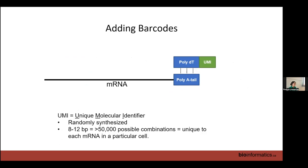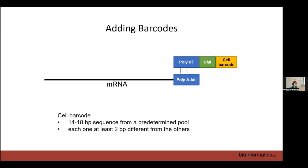The UMI is a randomly synthesized barcode, typically 8 to 12 base pairs, giving over 50,000 possible combinations. In theory this should be unique to a particular mRNA molecule in a particular cell. In practice, we end up using the combination of which read the UMI links to and the UMI sequence itself to identify a unique molecule.